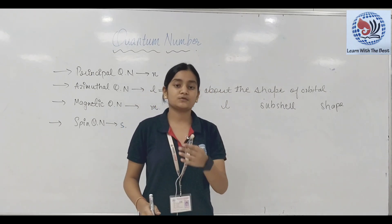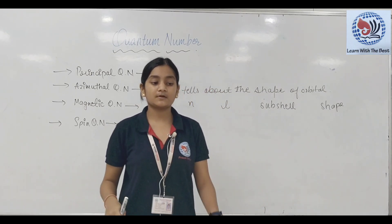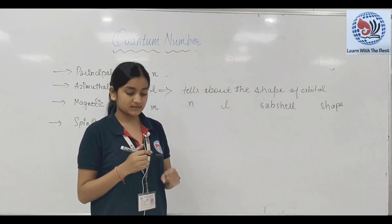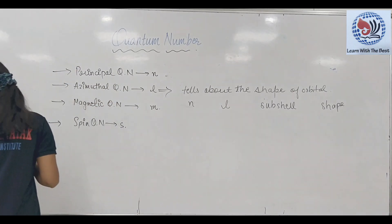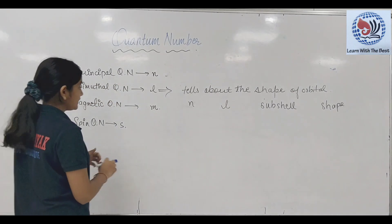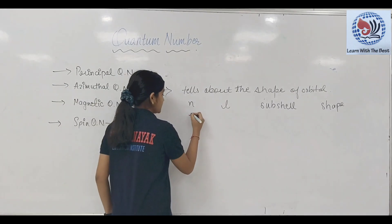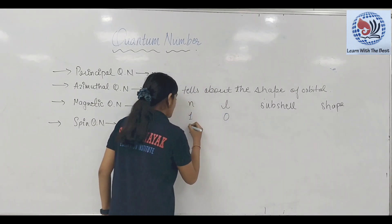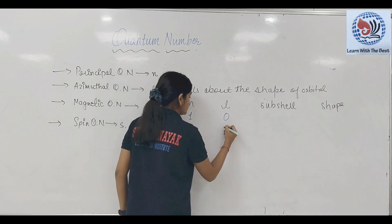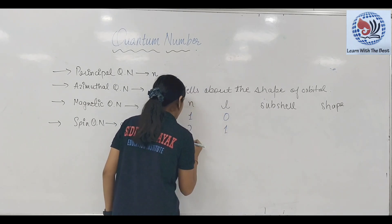उसके अंदर sub shell होता है, उसके अंदर orbital होता है, और orbital के अंदर electron revolve करता है। तो N की value अगर 1 होगी तो L की value 0 होगी, N की value 2 होगी तो L की value 0 और 1।